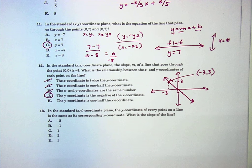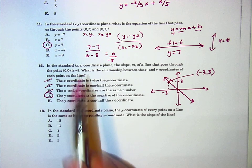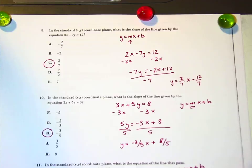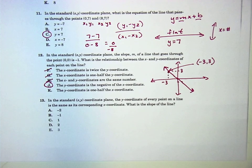Okay. Thirteen. In the standard x, y coordinate plane, I think they just like, look at this, they just love saying it. You see this? Nine. In the standard x, y coordinate plane. Ten. In the standard x, y coordinate plane, it's almost like this is coordinate geometry. In the standard x, y coordinate plane, the y coordinate of every point in a line is the same as its corresponding x coordinate. Whatever.